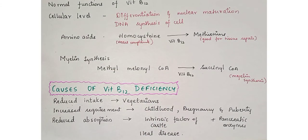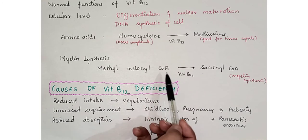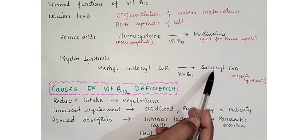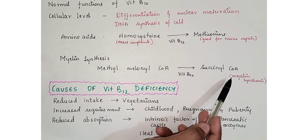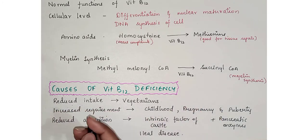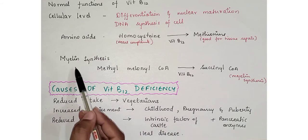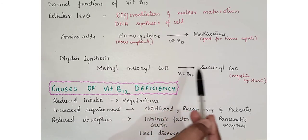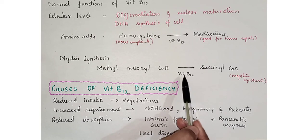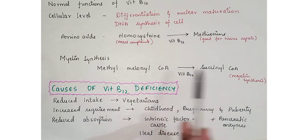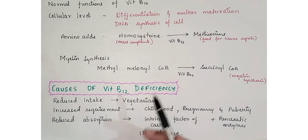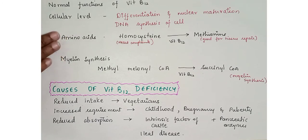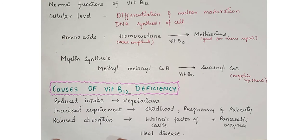Third, methylmalonyl-CoA is converted to succinyl-CoA by Vitamin B12. Succinyl-CoA helps in myelin synthesis — the myelin sheath formed on neurons. If Vitamin B12 is absent, this conversion is blocked, impairing myelin formation and leading to various clinical features we will study shortly. These are the key normal functions of Vitamin B12.